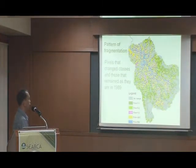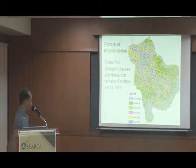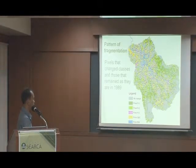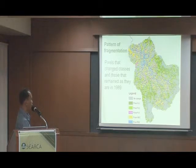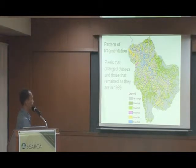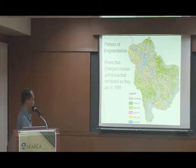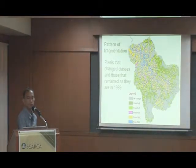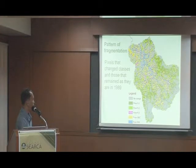We can see the pattern of fragmentation in the map. There are many areas where changes did not occur. The changes involving closed canopy forest are more spatially aggregated than other land cover classes. Sparsely tree-covered forest is a more dynamic land cover type, and changes in that class are less aggregated in the map.